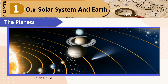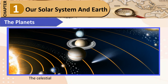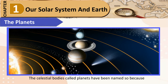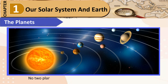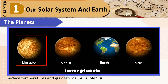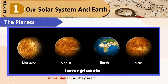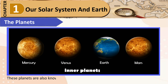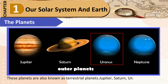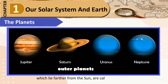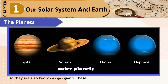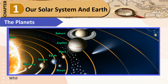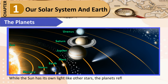The word 'planet' in the Greek language means 'wanderer.' Planets are celestial bodies in constant motion around their parent stars. The Sun has eight planets that orbit around it, and no two planets are the same — they have different compositions, surface temperatures, and gravitational pulls. Mercury, Venus, Earth, and Mars are called inner planets, or terrestrial planets, as they are closer to the Sun. Jupiter, Saturn, Uranus, and Neptune, which lie farther from the Sun, are called outer planets, or gas giants. These have rings around them and many moons. While the Sun has its own light, the planets reflect the light of the Sun.